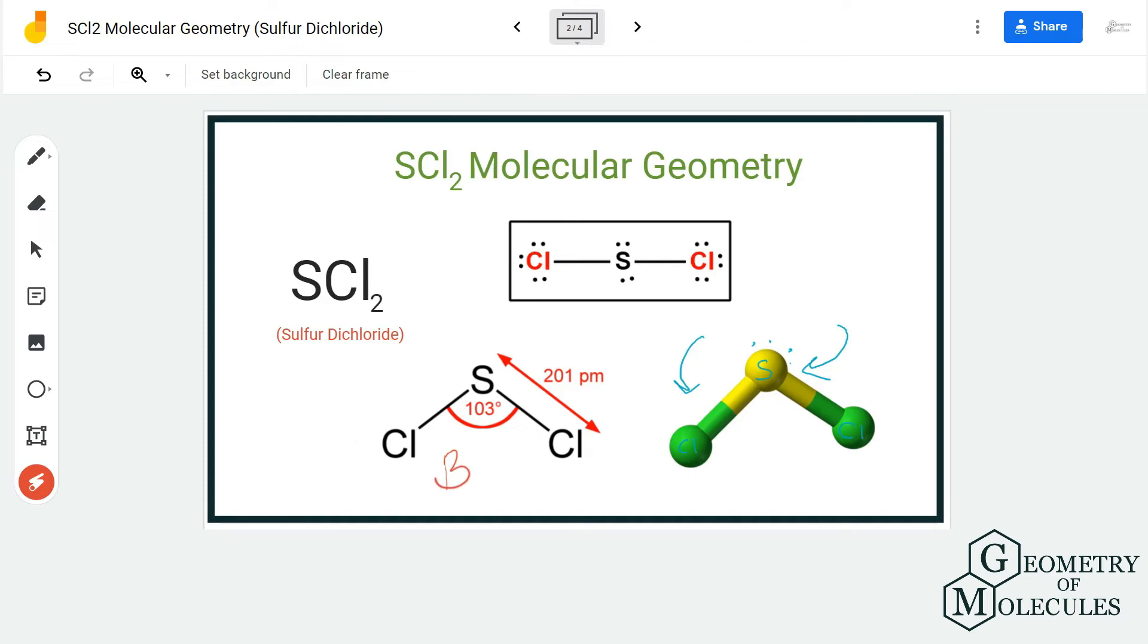But the electron geometry for SCL2 is tetrahedral because sulfur has four regions of electrons - it has two lone pairs and two atoms it is bonding to. So the electron regions for the central atom are four.